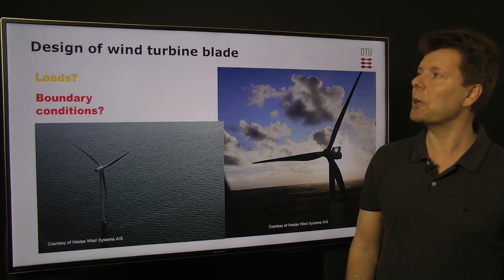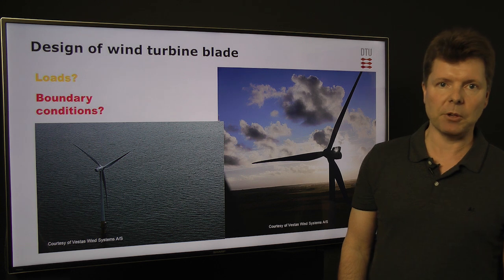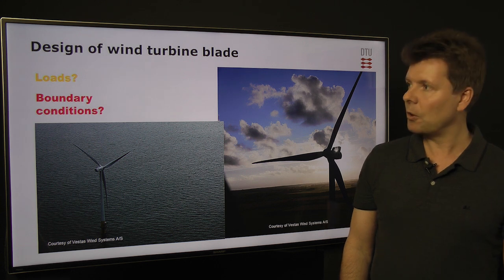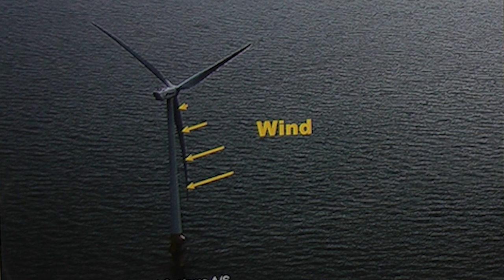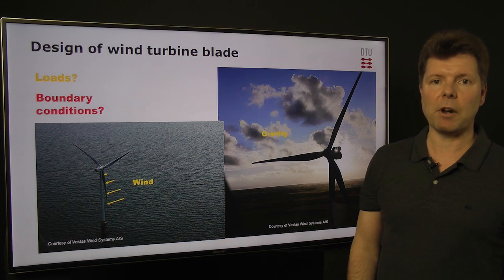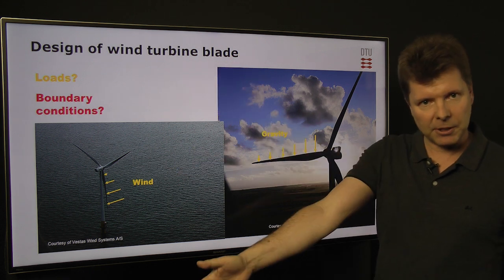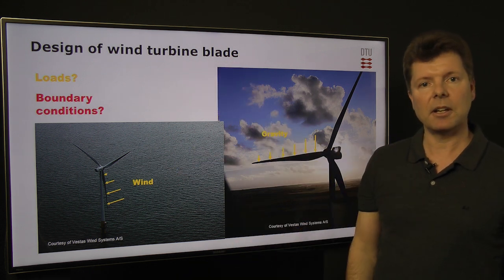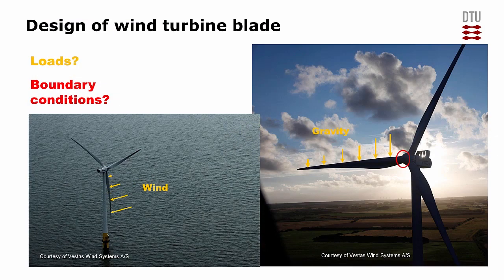Now let's look at wind turbine blades. In wind turbine blades, we have basically two types of loads: loads from the wind working on the blades in the flap-wise direction, and loads from gravity working on the blades in the edge-wise direction. The boundary condition is where the blade is connected to the hub.